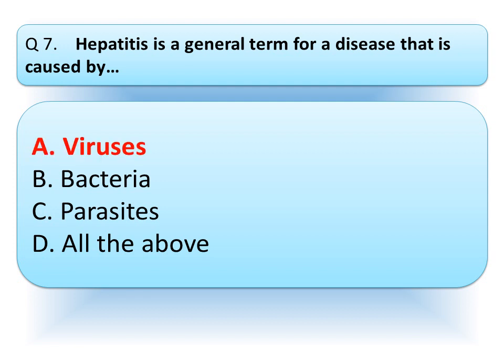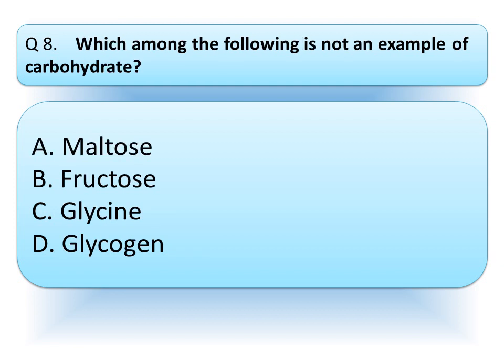And the correct answer is option A, Viruses. Which among the following is not an example of carbohydrate? Our options are: option A, Maltose; option B, Fructose; option C, Glycine; or option D, Glycogen. Think about the correct answer.